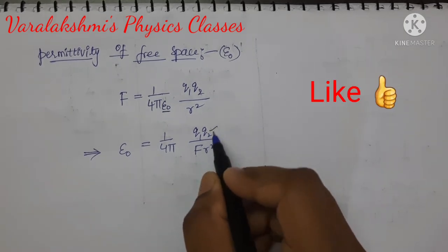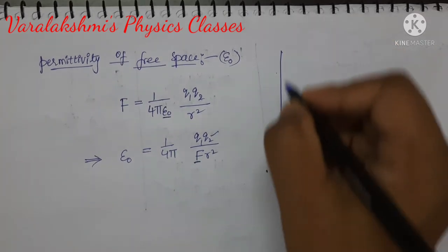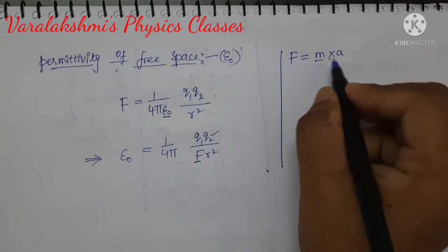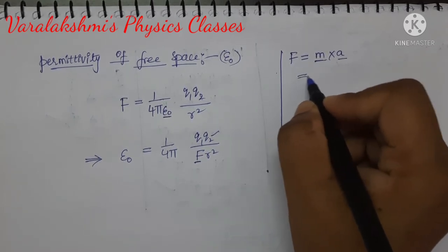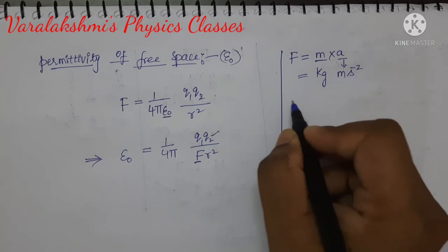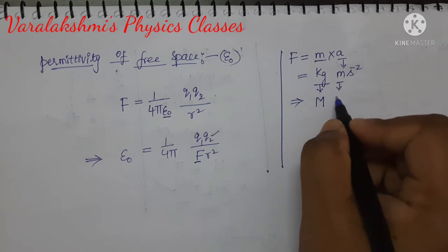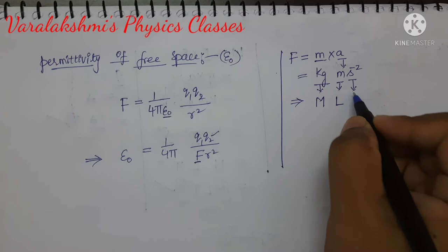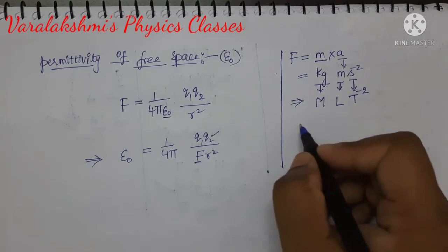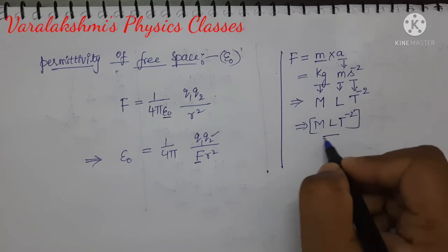We have to find the dimensions for charge and force, then substitute in this equation. Let us find for force. Force is equal to mass into acceleration. Now write the SI unit for each of these terms: for mass, kilogram; for acceleration, meter per second square. Now write the dimensions: mass is expressed in terms of capital M, meter in terms of L, and second in terms of capital T — so T power minus 2. The dimensional formula for force is M L T power minus 2.